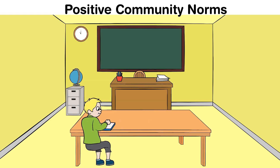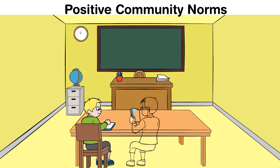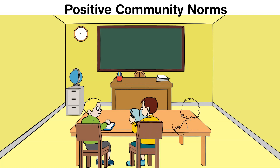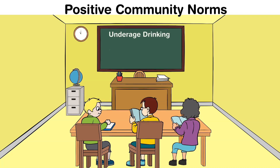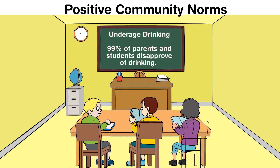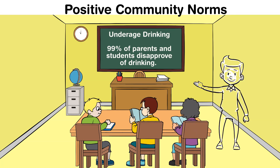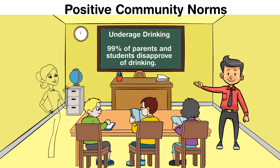For example, suppose you wanted to address underage drinking. Maybe there's a misperception that there is a massive problem in your community. In that case, you might focus your efforts on children, parents, and schools, telling them something like: 99% of students and parents disapprove of drinking. This shows a more positive norm and inspires children to do what their peers are doing — not drink.